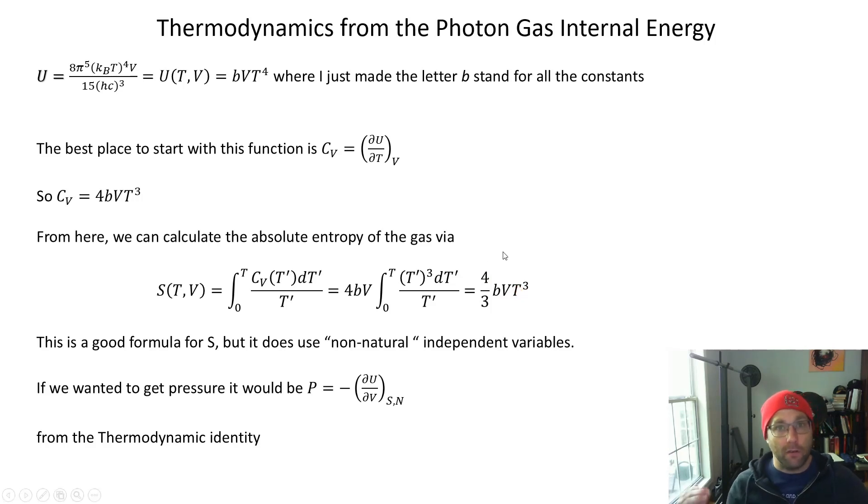We get this result that the entropy of the photon gas is four-thirds BVT cubed. This is a fine formula for entropy, but it does have non-natural independent variables. We typically expect entropy to be a function of U and V. All the formalism of thermodynamics considers S as a function of U, V, and possibly N. This function by itself is not enough to let us go full steam ahead with thermodynamics.